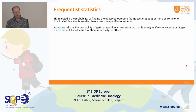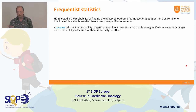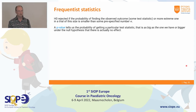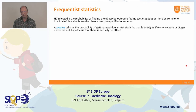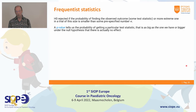We reject the null hypothesis if the probability of finding an observed outcome — or test statistic, such as a mean or survival hazard ratio — is more extreme in a trial of a particular size than some pre-specified alpha level. Usually we set alpha at 0.05. We do our experiment, take measurements in our sample, and find a p-value. The p-value gives us the probability of getting a statistic as extreme as or more extreme than what we would expect under the null hypothesis.